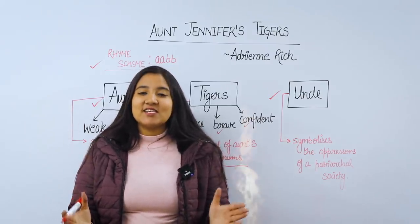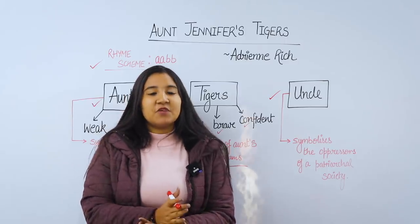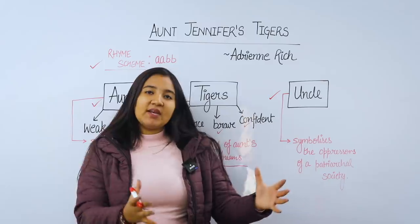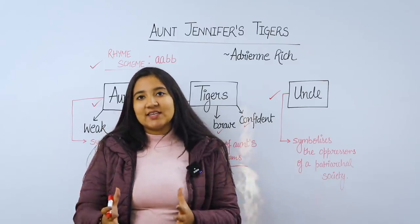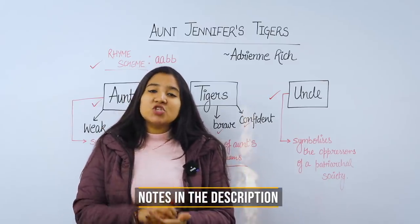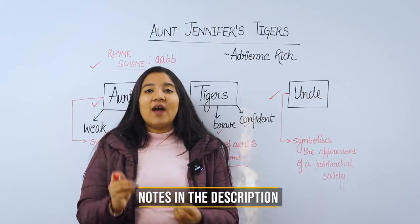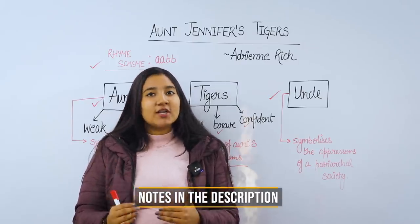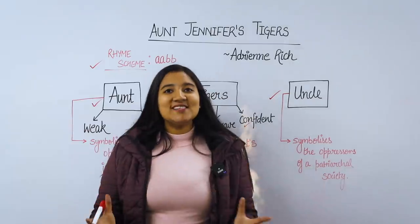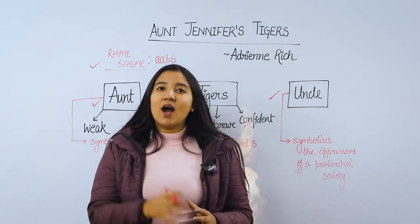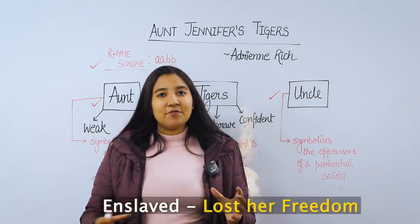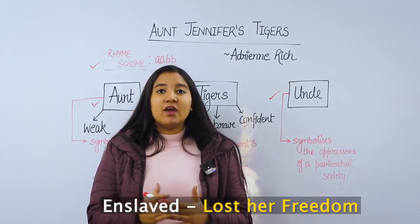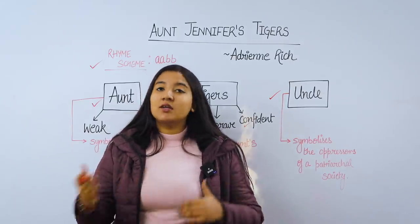This discomfort and uneasiness which she feels shows us that in the male-dominated patriarchal society, it is very difficult for females to find freedom and they have to struggle a lot. In the last stanza, we are told that Aunt is so much enslaved in her marriage and her life that her misery will continue even after her death.